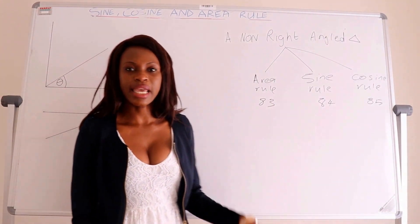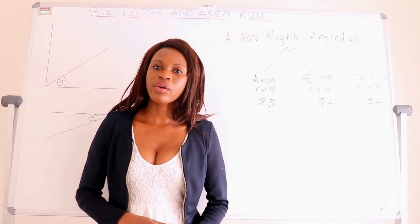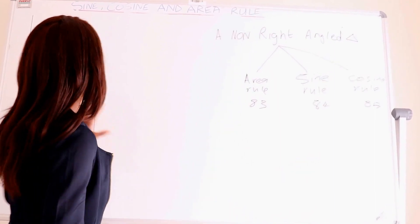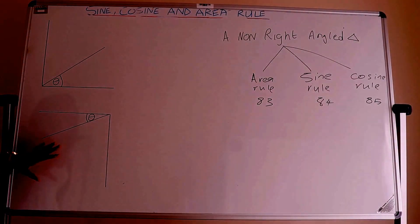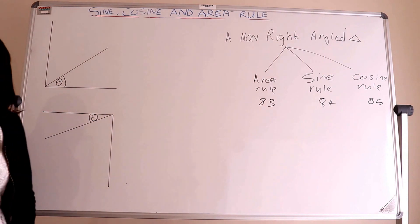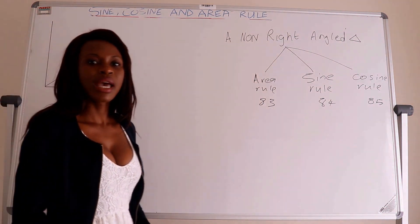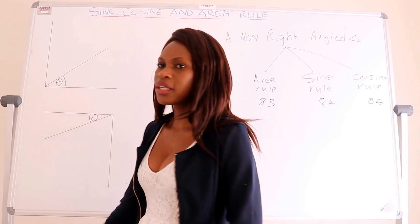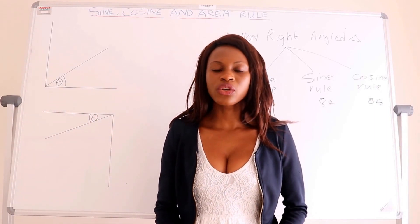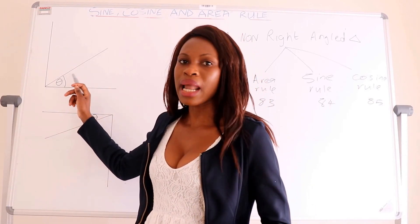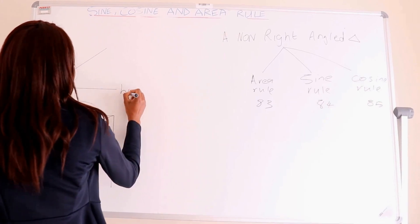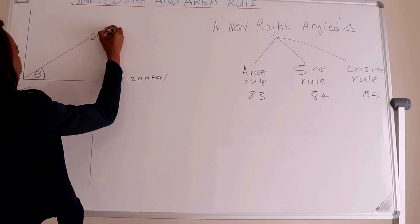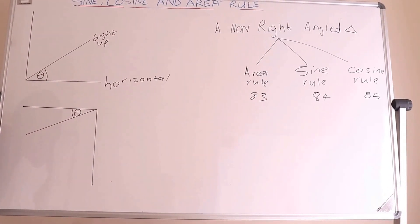Today we are dealing with lesson 83. With the area rule, you have to understand that we have three area rules. First, let me show you these two triangle sketches. The first one illustrates the angle of elevation, which is always the angle between the horizontal and the line going upward to an object — that line is our horizontal, and this line here is our line up to an object.